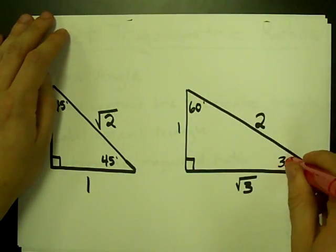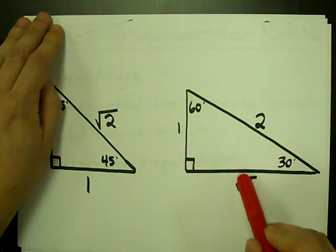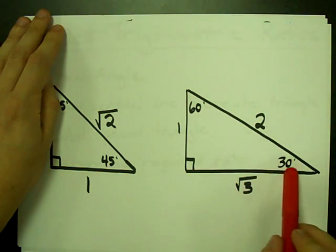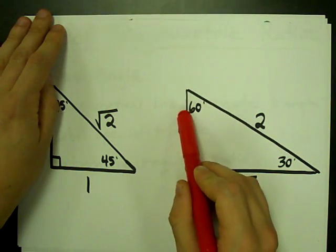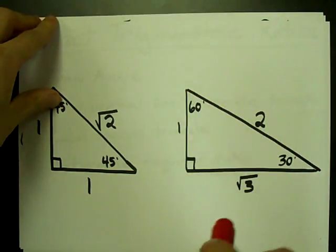Another one has angles of 30, 60. Across from the 60 is a side length of root 3, across from the 30 is a side length of 1, and the hypotenuse is 2. We'll come back to this, you have to memorize it.